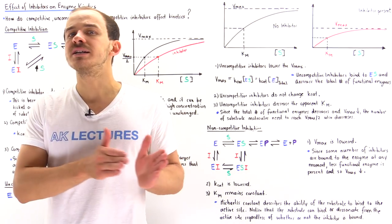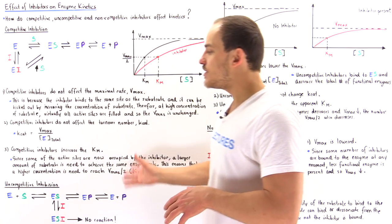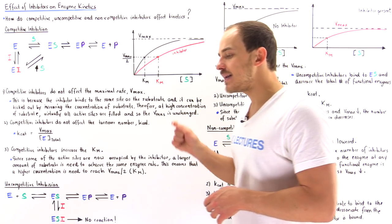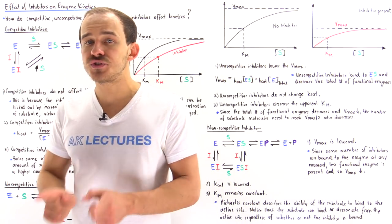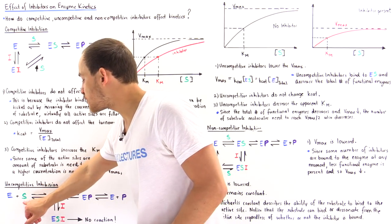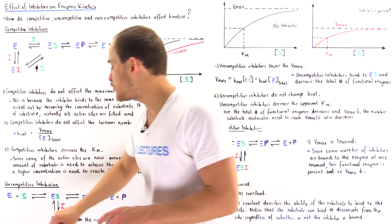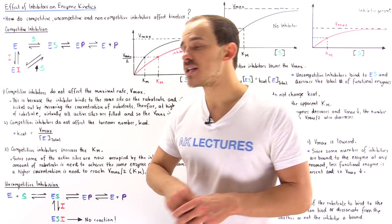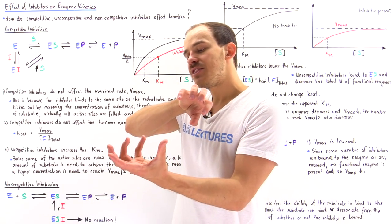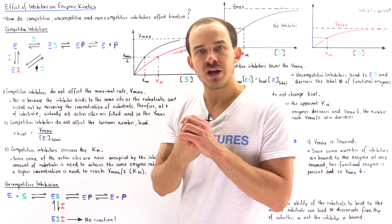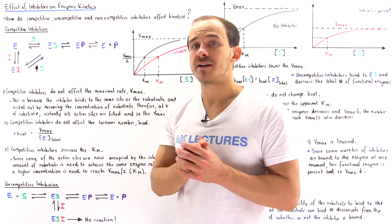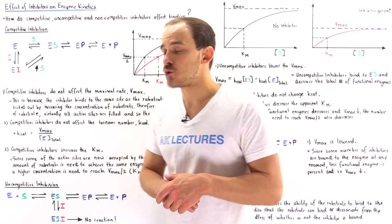Now let's move on to uncompetitive inhibition. In this type of inhibition, the only time the inhibitor can bind onto the enzyme is when the substrate is already bound. So the substrate collides and binds into the active site of the enzyme, and once we form the enzyme-substrate complex, that creates a conformational change that creates a brand new pocket — the allosteric site — that the inhibitor can now bind to.